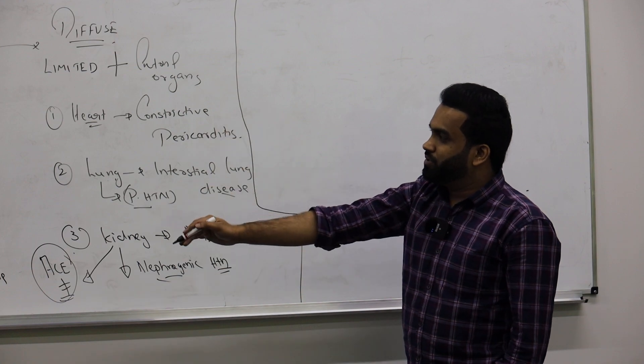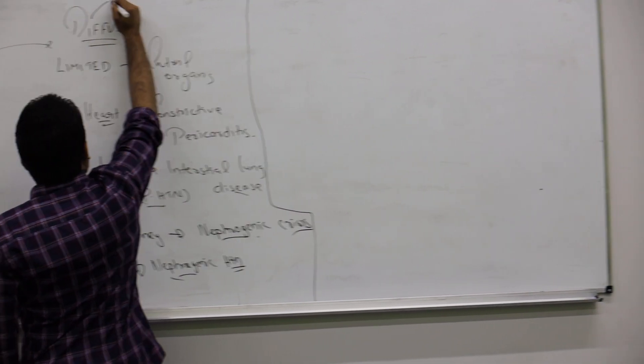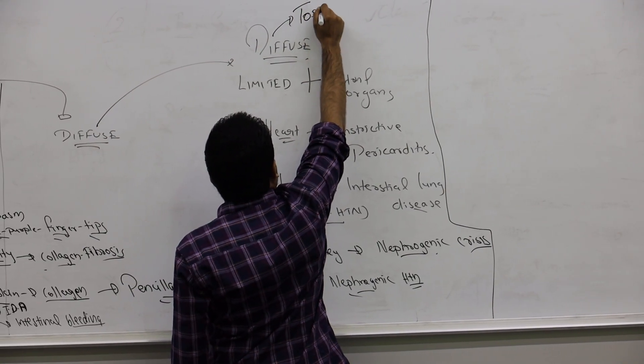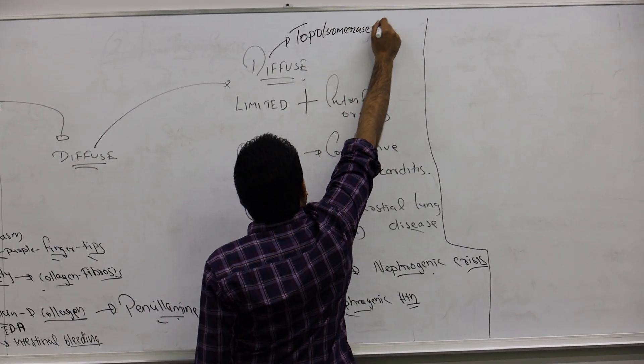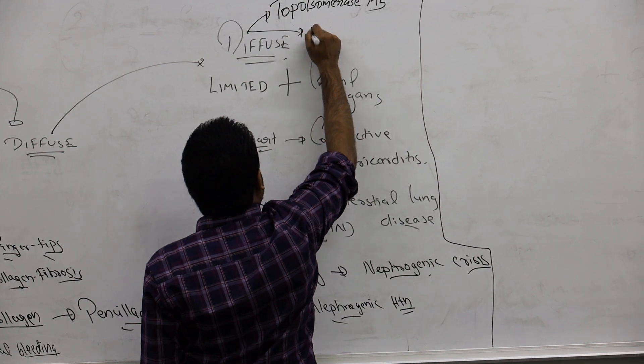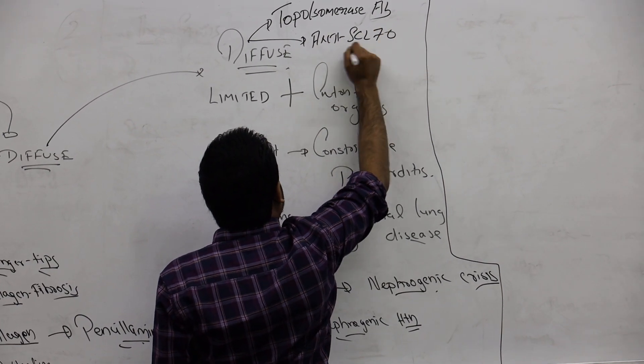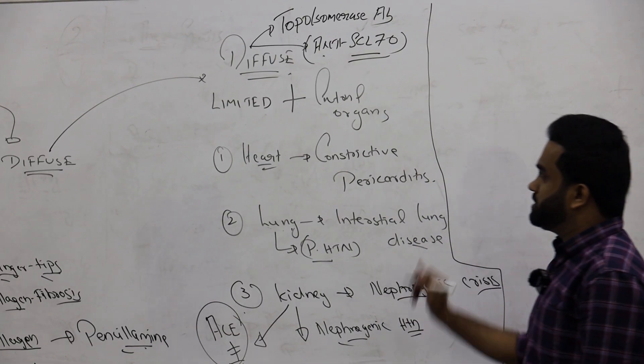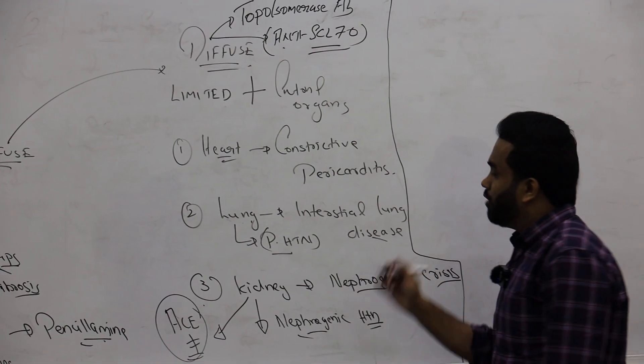That's the main difference between diffuse and limited. In diffuse, the antibody you see is called anti-topoisomerase antibody or anti-Scl-70 antibody. These are the main features you have to know from diffuse as well as limited scleroderma.